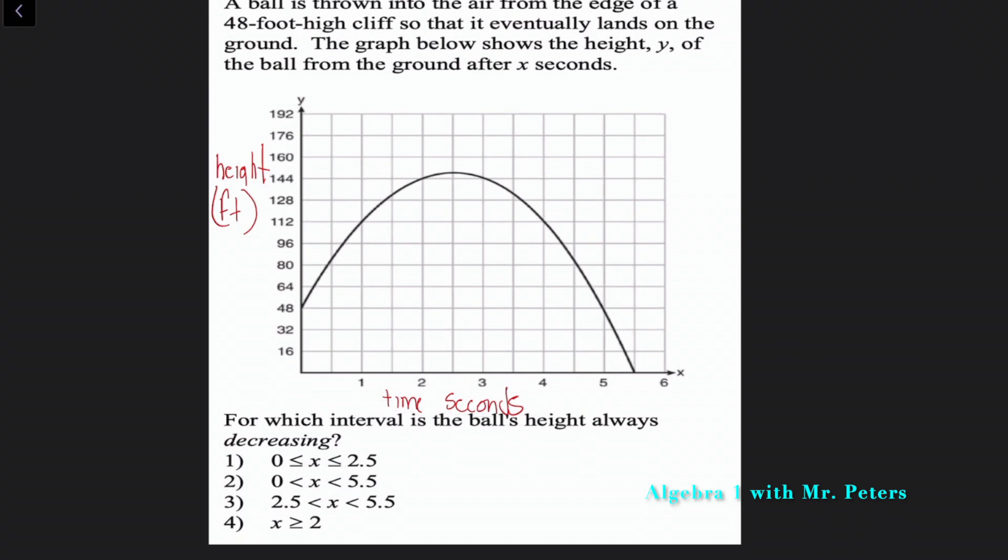So basically, they're saying, when is the ball's height decreasing? Listen, we know at 48 feet, this is where the ball starts, and then we throw it into the air. We know the highest point is going to be about 144 feet, and it's going to go all the way to the ground. That's the x-intercept. So just off quick, we know when between x is zero and two and a half, it's increasing. That's what's happening. So we know answer choice one cannot be the answer. Then when we look at the second answer choice, it's basically saying when x is greater than zero and less than 5.5. But we know that's not true because it's not decreasing the entire time. There's parts where it's increasing. So we should know that this is wrong as well.